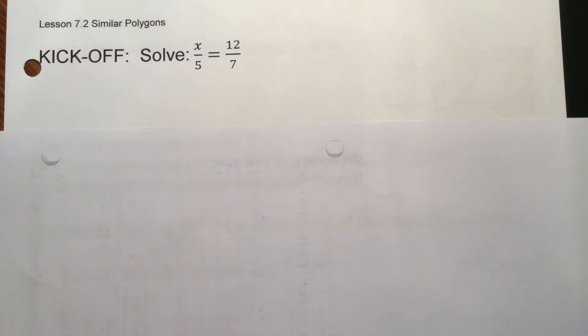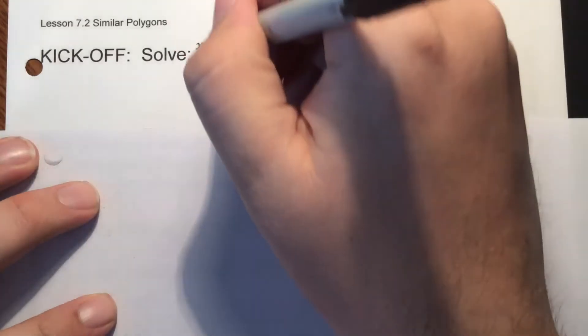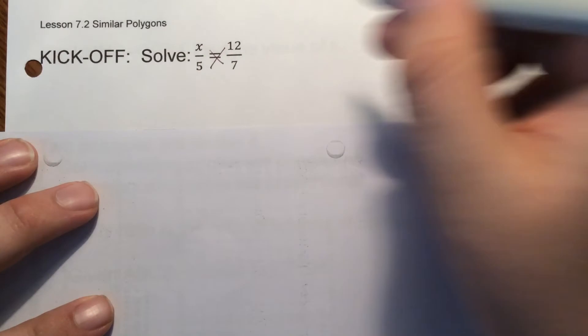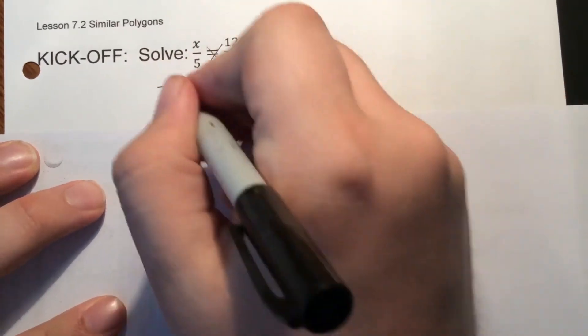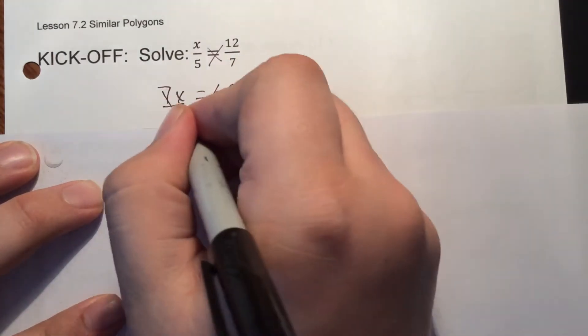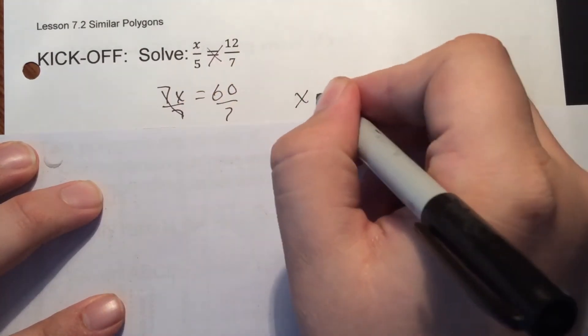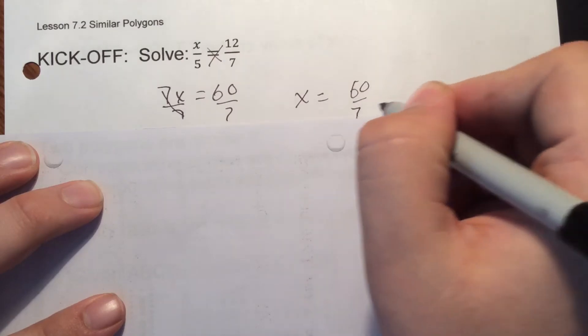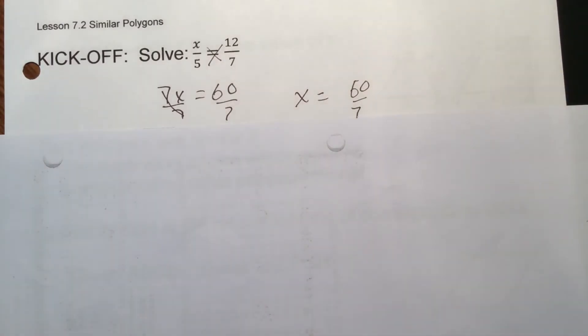But first, kind of a review from last time with the kickoff. Again, we're going to cross multiply those. So x times 7 would be 7x and 5 times 12 would give you your 60. So if you divide by 7 then, x equals 60 over 7. We're just going to leave it as that fraction. If you want to find what the decimal would be, you can go ahead and divide that out. You're going to be 8 point something.